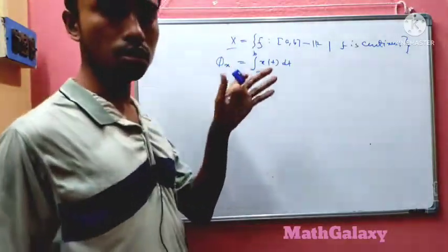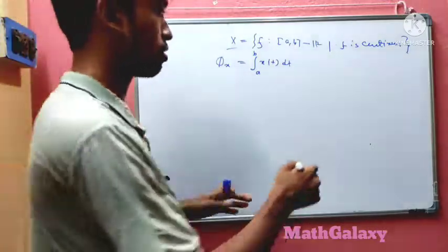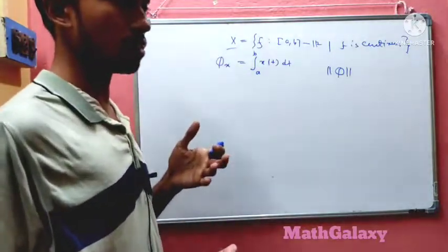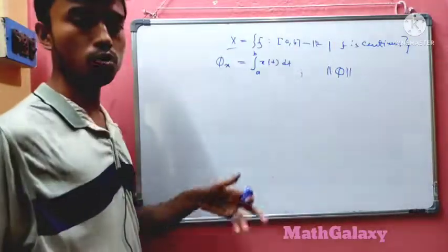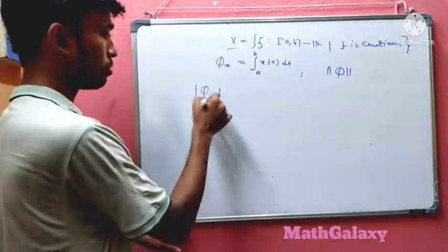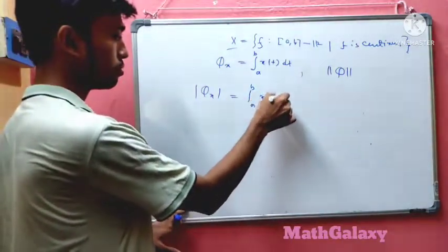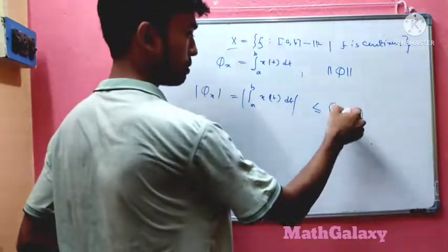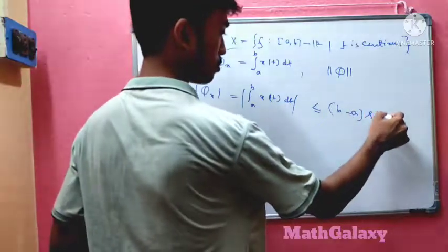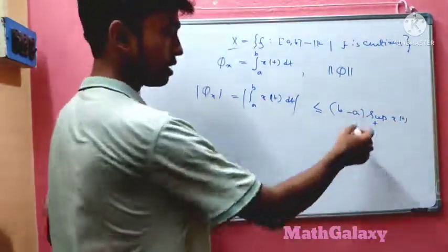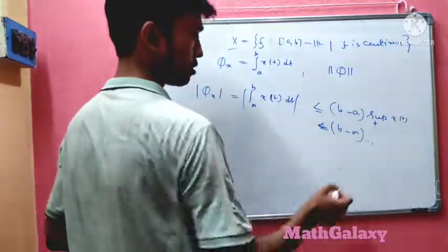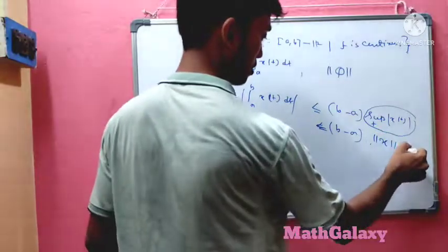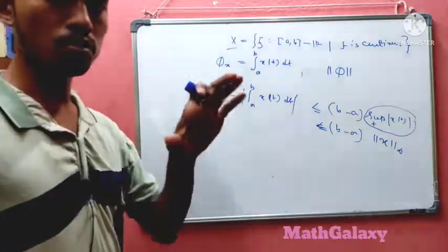To find the norm, first consider |φ(x)|, which equals the absolute value of the integral from a to b of x(t) dt. This is less than or equal to (b - a) times the sup norm of x(t) over t in [a,b]. The sup norm of x means the maximum value of the function, that is, sup over t in [a,b] of |x(t)|.